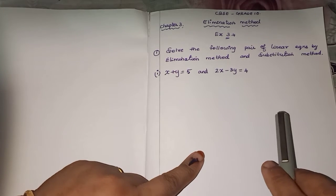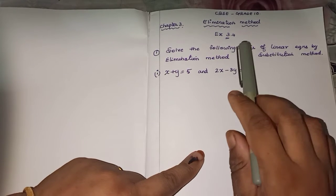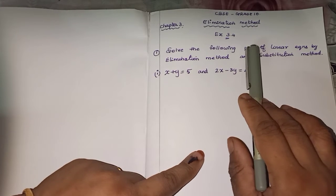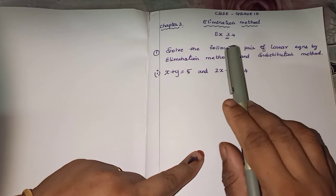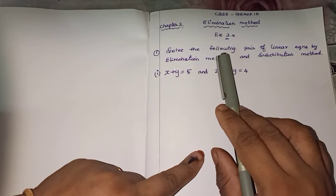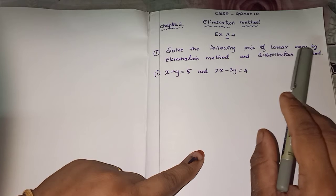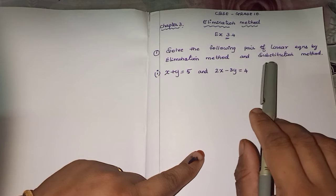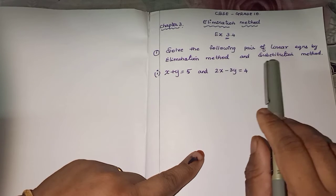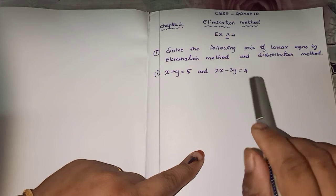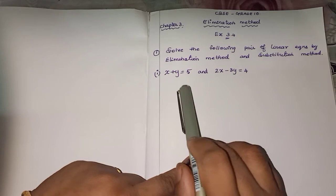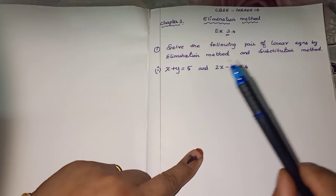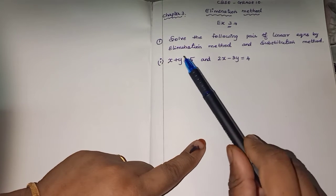Welcome to Lawmax channel dear students. Today we are going to see CBSE grade 10 elimination method. Already we saw substitution method. So the problem is: solve the following pair of linear equations by elimination method and substitution method. Two equations they have given. So elimination method first.